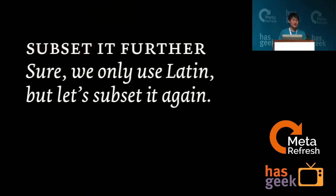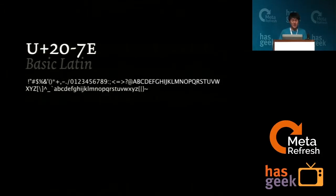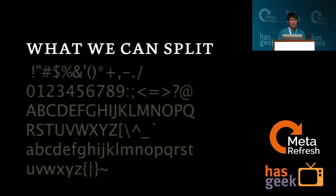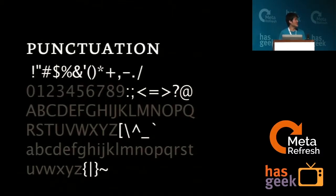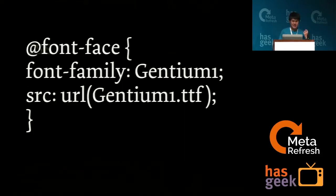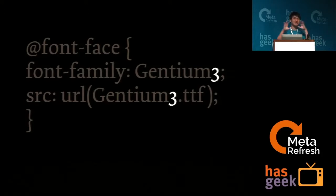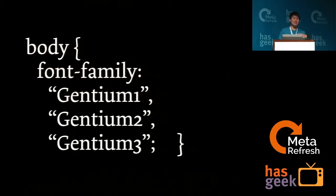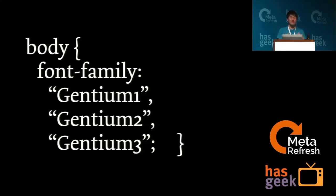What if we subset even further? Instead of just Latin, we split it into uppercase, lowercase, numerals, and punctuations. In the CSS, instead of one font file, you have multiple: Gentium-1, Gentium-2, Gentium-3. In the CSS body, you call them in a font stack — if an uppercase character isn't in Gentium-1, fall back to Gentium-2. It's just a standard CSS font stack. We're splitting one font into different constituent parts.